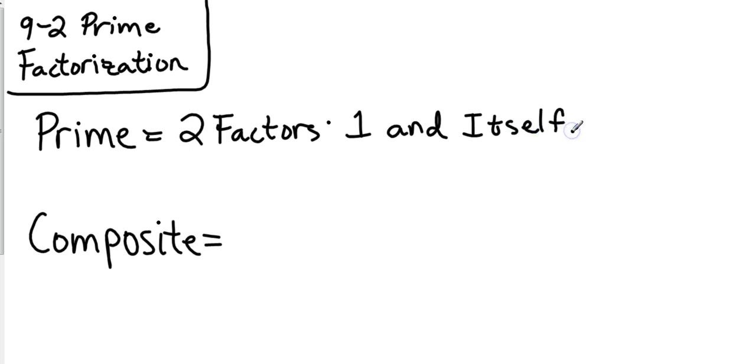The only thing that will divide into the prime numbers are one, which one will divide into everything, and itself. A composite number has more than two factors. Okay, so prime numbers, one and itself. Composite numbers, more than two factors.